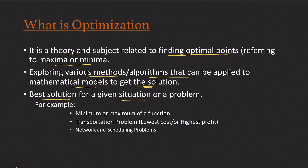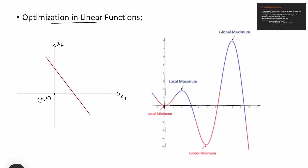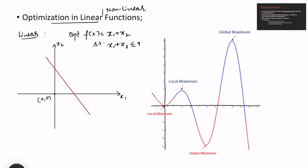Let me first give you an example with mathematics only. We are all aware of how to find the minima and maxima of a function. Consider optimization in both linear and non-linear functions. For the linear case, I want to optimize a function f(x1, x2) = x1 + x2, with the condition that x1 + x2 is less than or equal to 1, which is a straight line with this inequality.